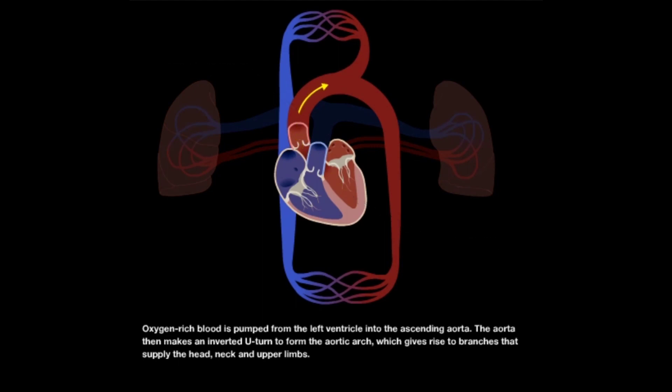The aorta then makes an inverted U-turn to form the aortic arch, which gives rise to branches that supply the head, neck, and upper limbs.